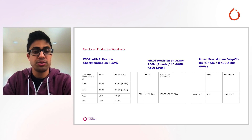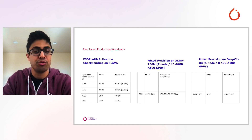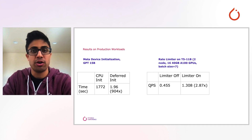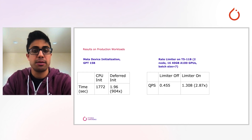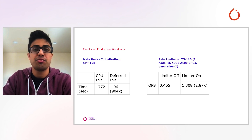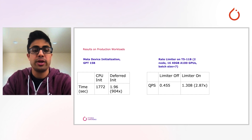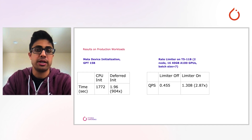On a Flava-based model, which is a multimodal vision and language model, activation checkpointing allows around 2x throughput improvements on models up to nearly 3 billion parameters, while it is required to enable training of larger variations on a single node. Meta device initialization cut down model initialization time by 900 times by skipping all CPU initialization and initializing just-in-time directly on GPUs. Our rate limiter feature avoids over-allocation of memory blocks, and this enabled nearly a 3x speedup on an 11 billion parameter language model by avoiding excessive memory thrashing and defragmentation procedures.